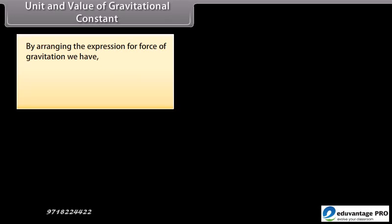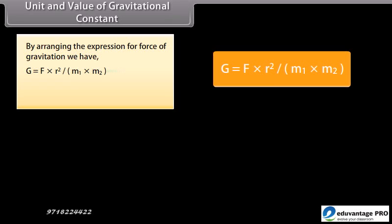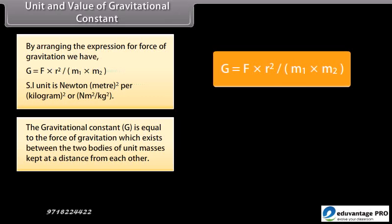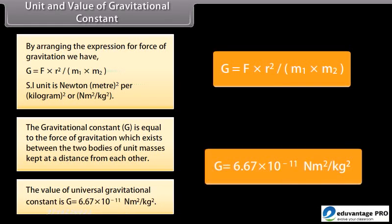Unit and Value of Gravitational Constant: By rearranging the expression for force of gravitation, G = F × R² / (M1 × M2). The SI unit is Newton meter squared per kilogram squared. The gravitational constant G is equal to the force of gravitation which exists between two bodies of unit masses kept at a unit distance from each other. The value of the universal gravitational constant is G = 6.67 × 10⁻¹¹ N·m²/kg².